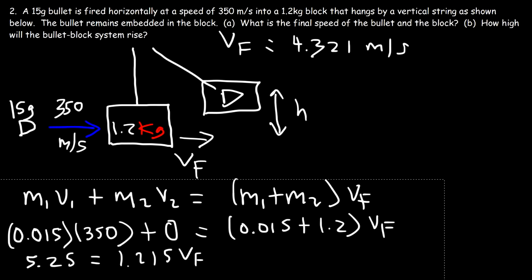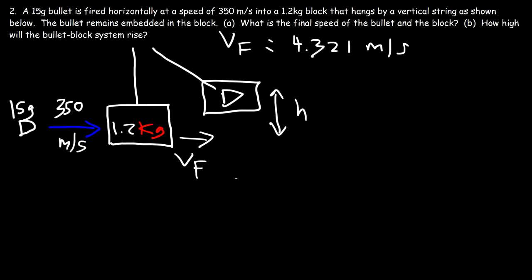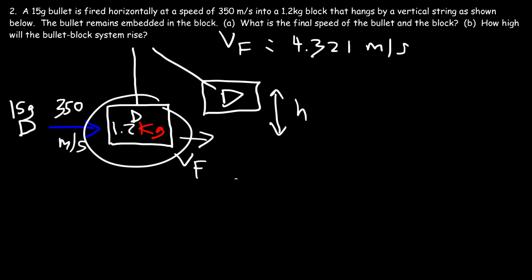Now that we have the final speed, we can use conservation of energy to find how high the bullet-block system will rise. Be careful — this is an inelastic collision, so kinetic energy was lost during the collision. However, once the collision is over and the bullet is inside the block, the energy it has after the collision will be conserved as it moves up. So kinetic energy will convert to potential energy.